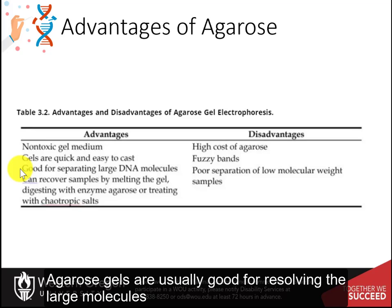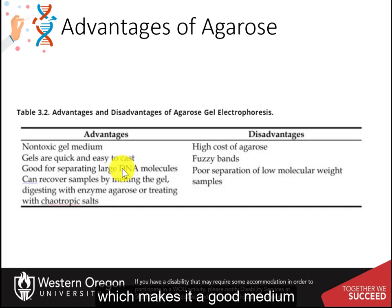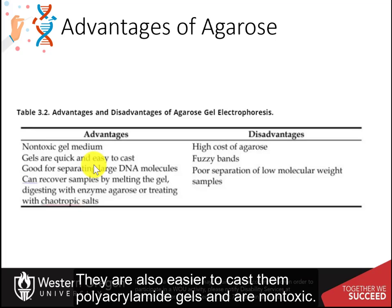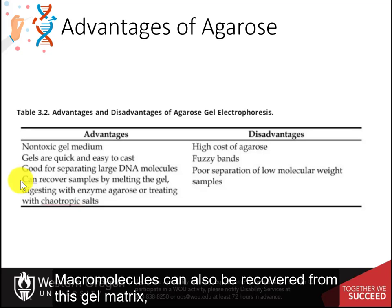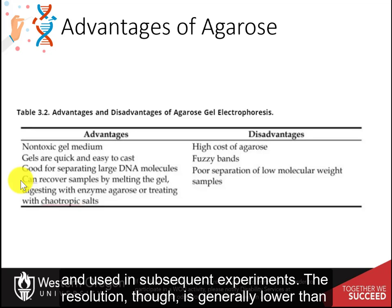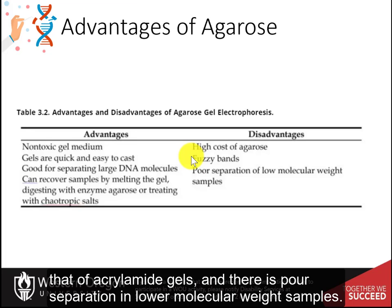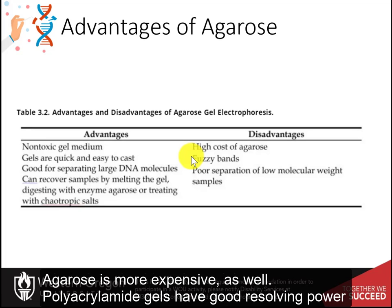Agarose gels are usually good for resolving large molecules, which makes them a good medium for the large polymers of DNA. They are also easier to cast than polyacrylamide gels and are non-toxic. Macromolecules can also be recovered from the gel matrix and used in subsequent experiments. The resolution, though, is generally lower than that of acrylamide gels, and there is poor separation in lower molecular weight samples. Agarose is more expensive as well.